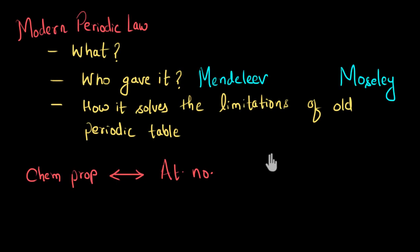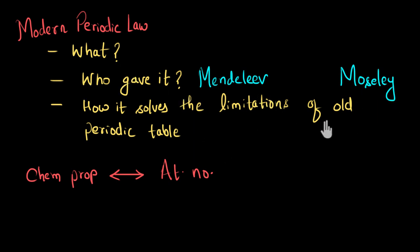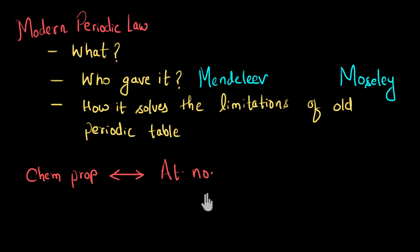In this video, we spoke about the modern periodic law — who gave it, and how it solves the limitations of the old periodic table. I also hope you understood the explanation of how chemical properties are related to the atomic number.